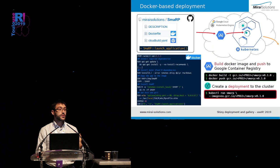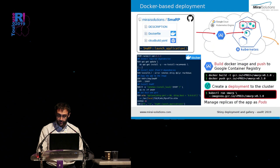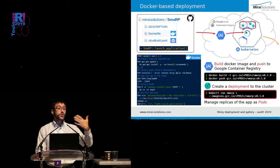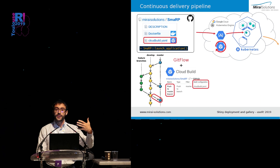Once the Docker image is available on a registry, we can use the command line tool kubectl to instruct Kubernetes to create a deployment called SMARP from the image we have put on the container registry. In Kubernetes, a deployment manages a set of replicas of your app by running so-called pods in a way which is flexible, dynamic, and most importantly, scalable. What we have seen here is a way to deploy an app in a one-off deployment. But what you probably want on top of this is a continuous delivery pipeline.